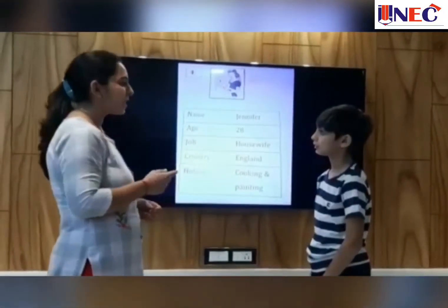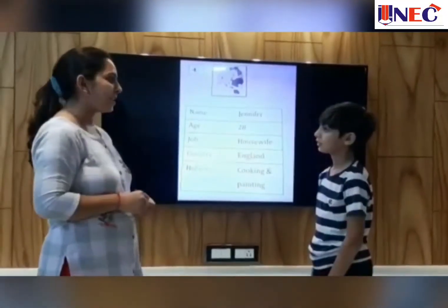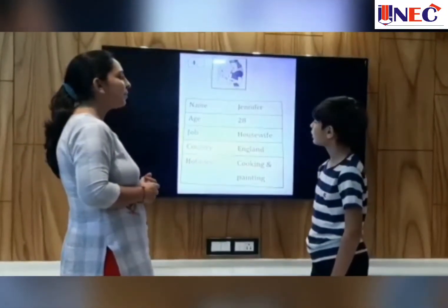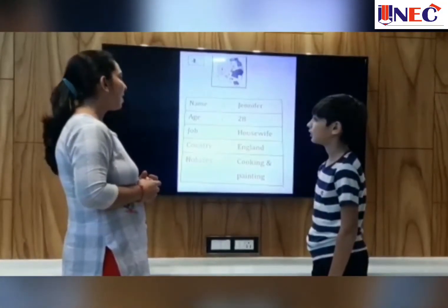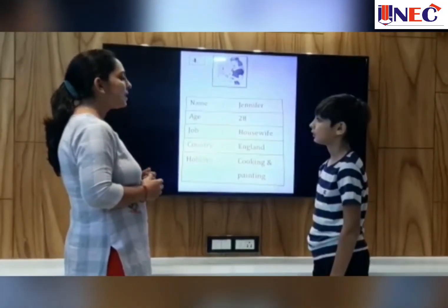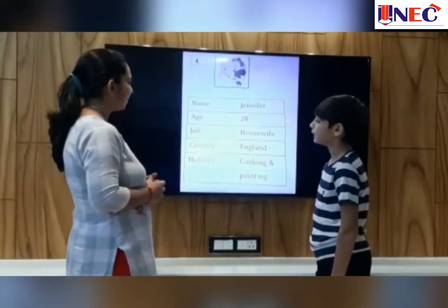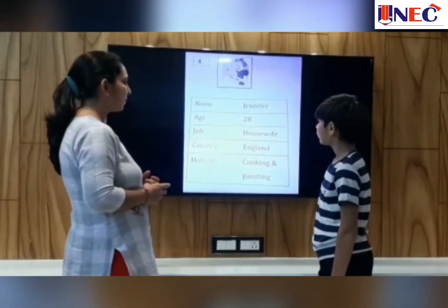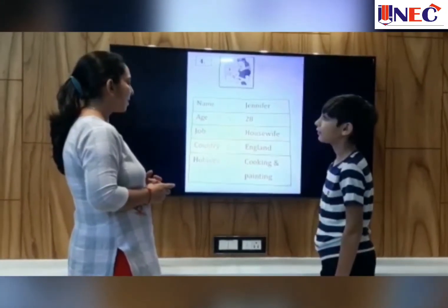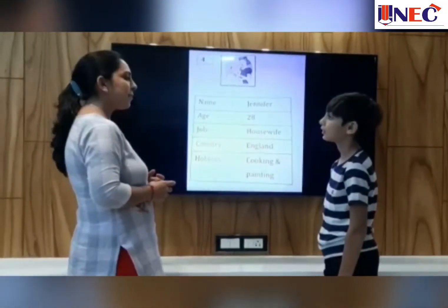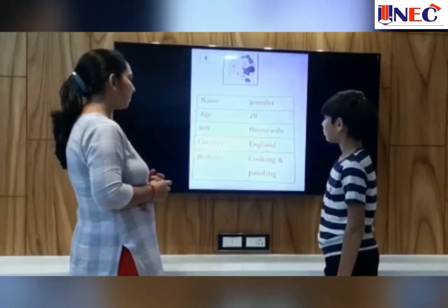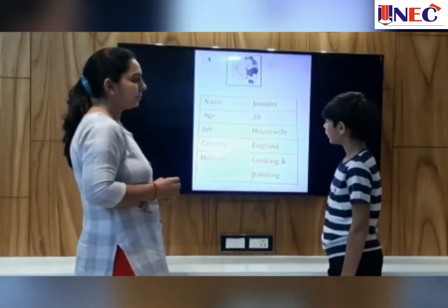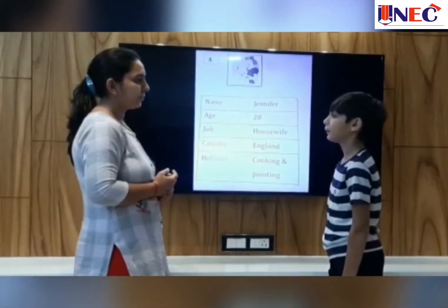First I will describe my sister and you give me the answer. Okay. What's her name? Her name is Jennifer. How old is she? She is 28. What does she do? She is a housewife. Where is she from? She is from America. What does she like? She likes teaching and painting.